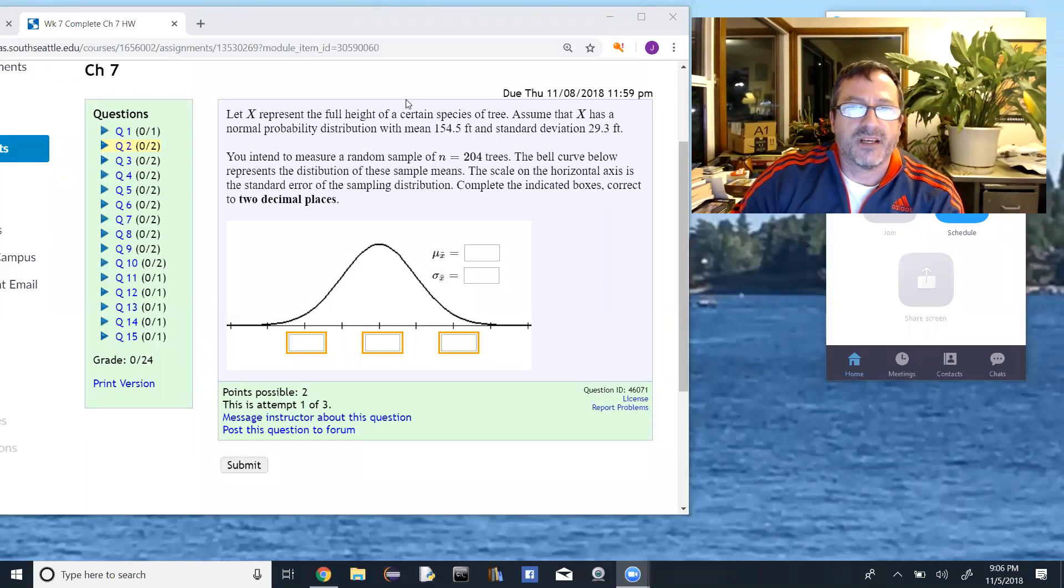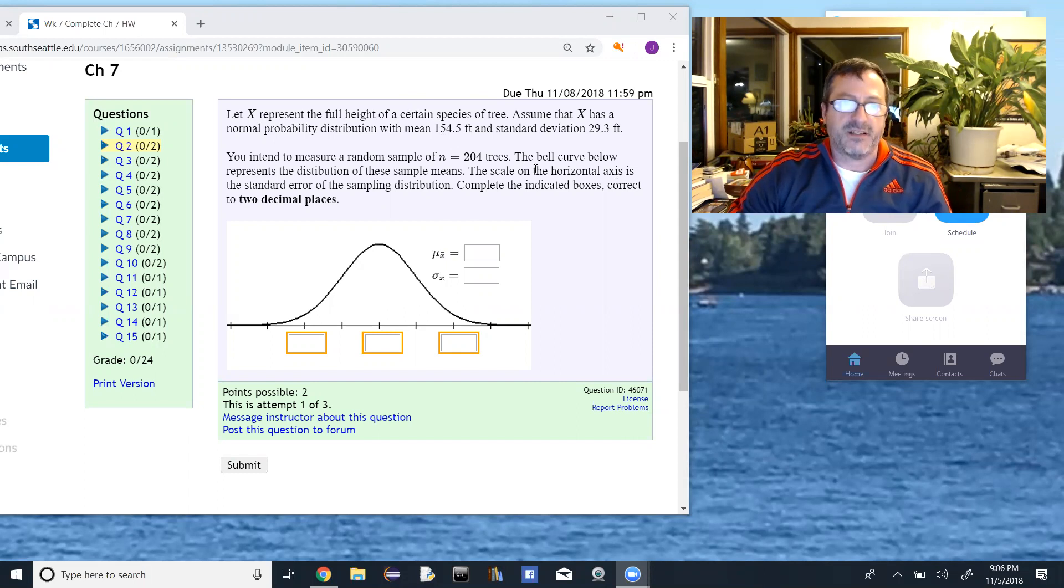Okay, so I wanted to make a quick video about the homework, in particular the first few problems from chapter 7. So I'm just looking at an example here. It says, let X represent the full height of a certain species of tree. Assume that X has a normal probability distribution with a mean of 155.4 feet and a standard deviation of 29.3 feet.